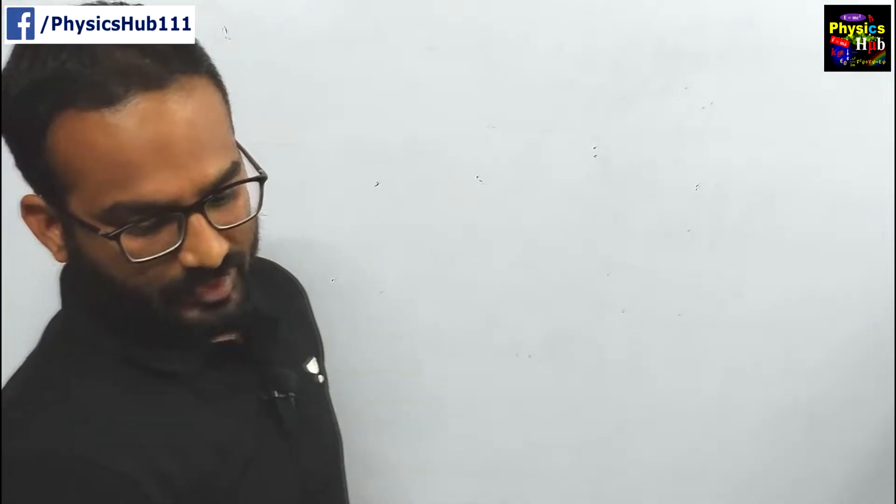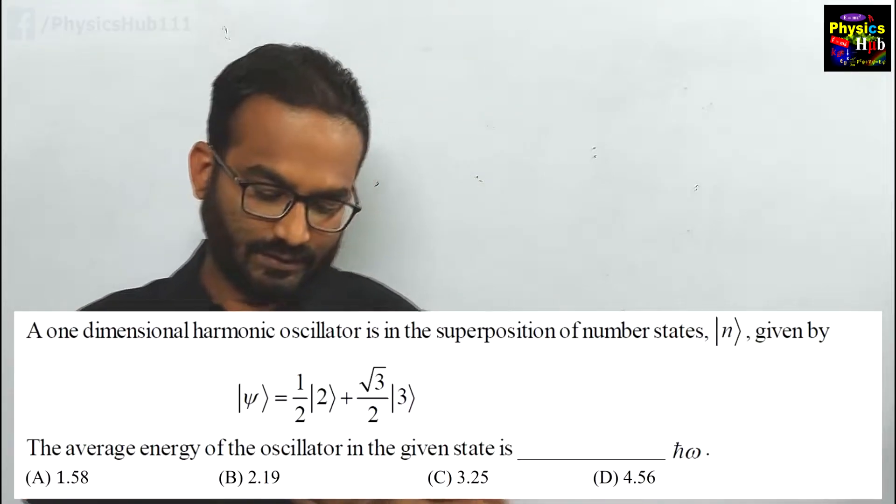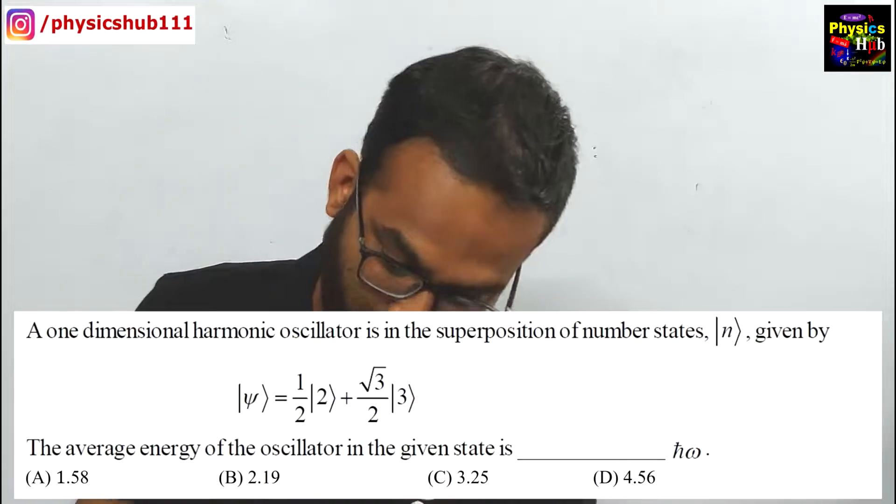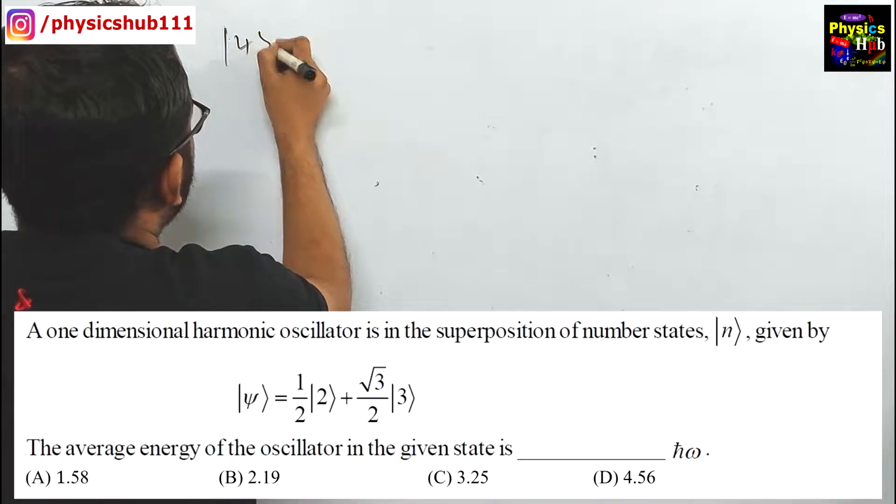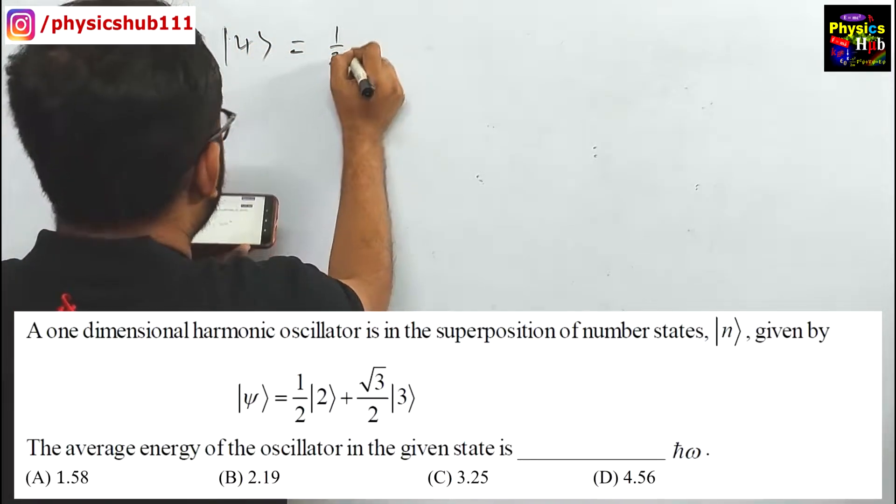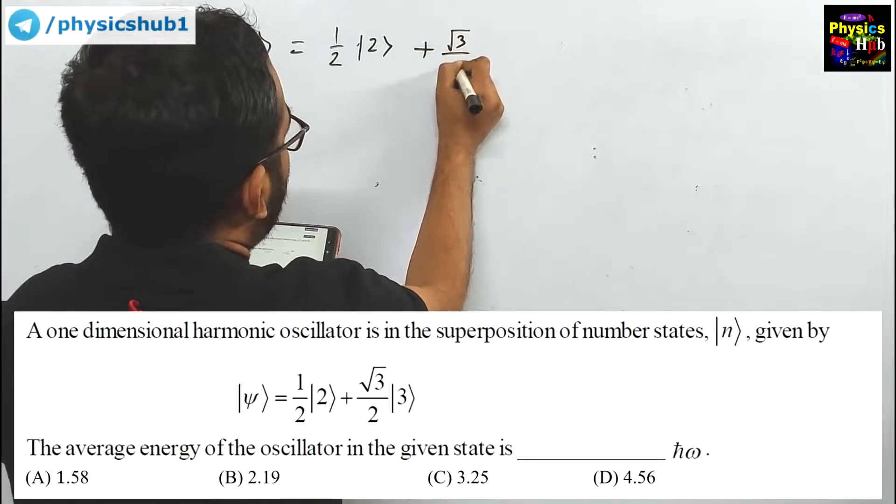This is from quantum mechanics. The problem reads: A one-dimensional harmonic oscillator is in the superposition of number states |n⟩ given by |ψ⟩ = 1/2|2⟩ + √3/2|3⟩.